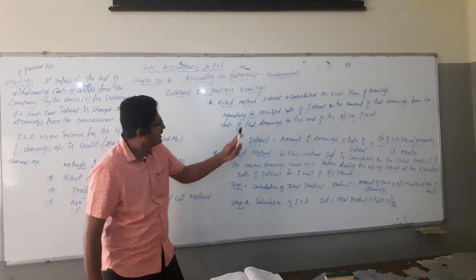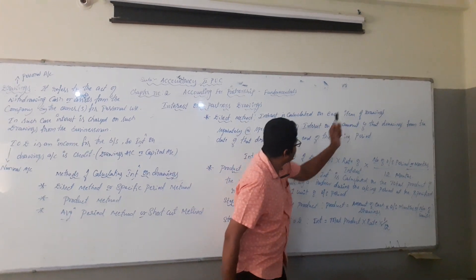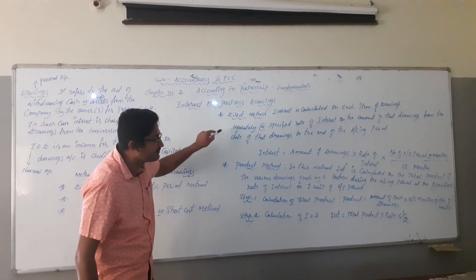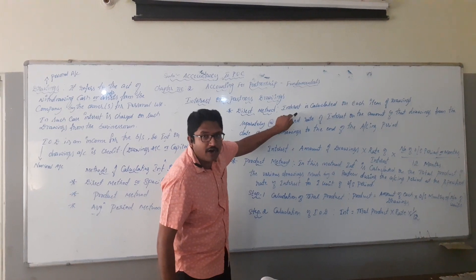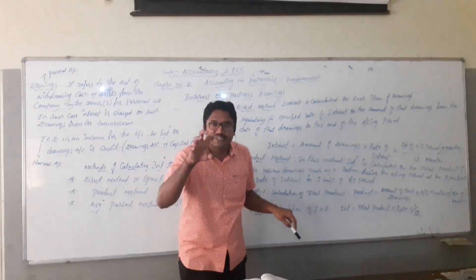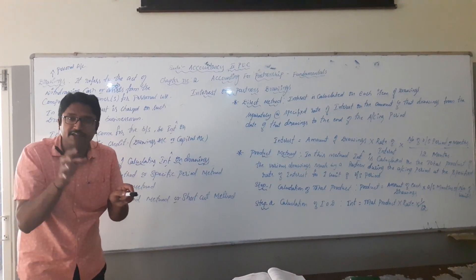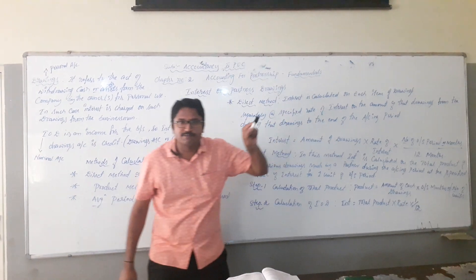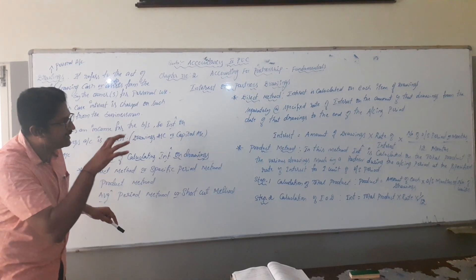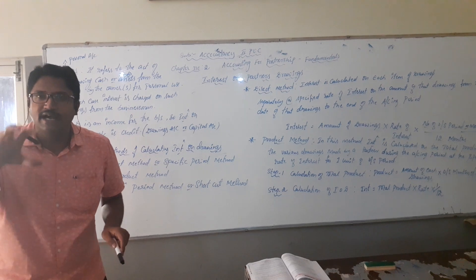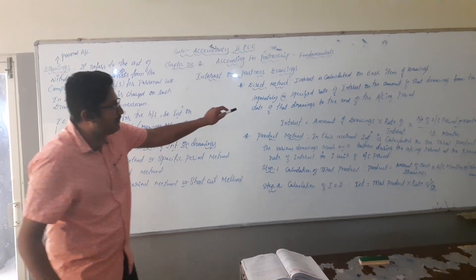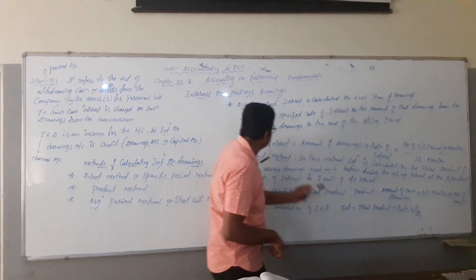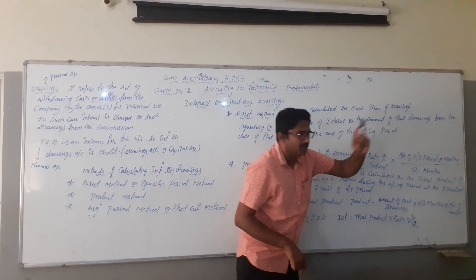In the direct method, interest is calculated on each item of drawings separately. The interest on drawings will be calculated on each item of drawings separately, which is withdrawn by the partners at a specified rate of interest. This rate of interest is specified in the partnership deed at the time of making an agreement. Interest is calculated from the date of that drawing to the end of the accounting period.